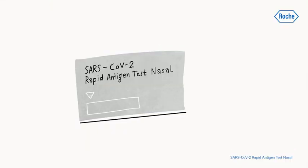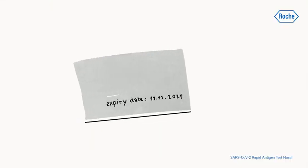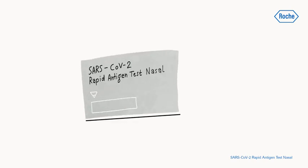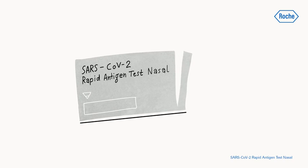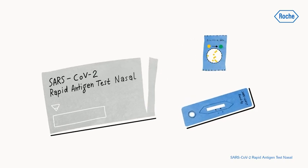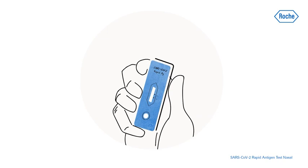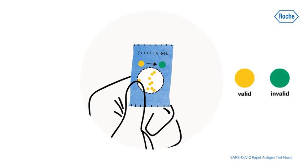For each test, check the expiry date on the back of the foil pouch. Do not use the test if the expiry date has passed. Open the foil pouch and remove the test device and the desiccant package. Ensure that the test device is undamaged and that the desiccant status indicator is yellow.